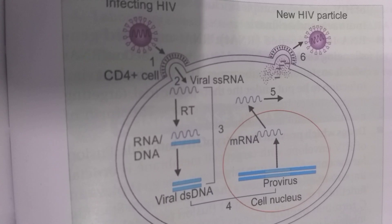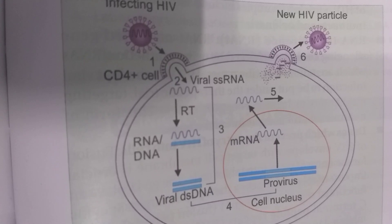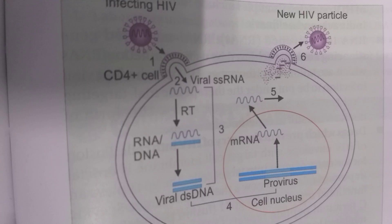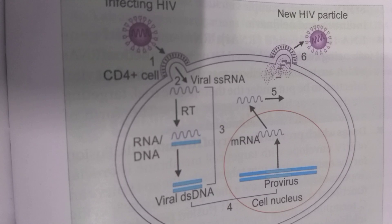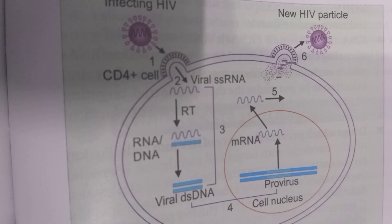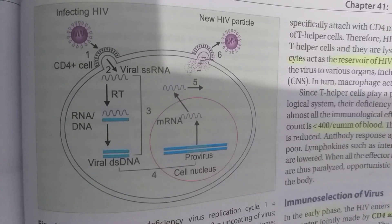The gp120 of the virus envelope specifically binds with the CD4 molecule on the surface of target cells. The CD4 receptor acts as the receptor for the virus. CD4 molecules are present on the surface of T helper cells, and therefore T helper cells are preferentially attacked by HIV.